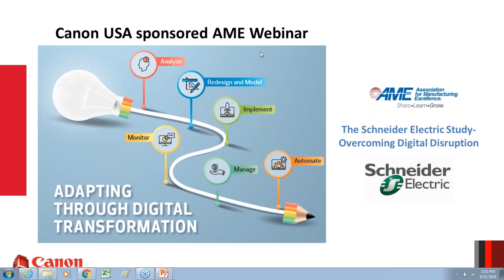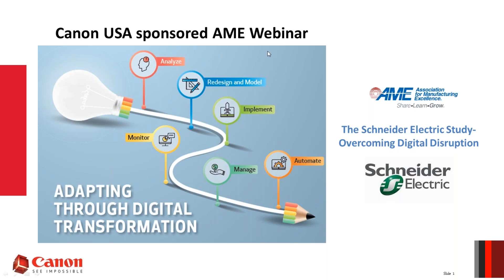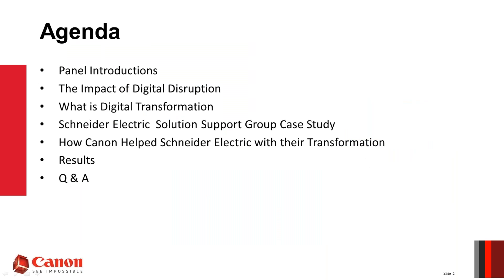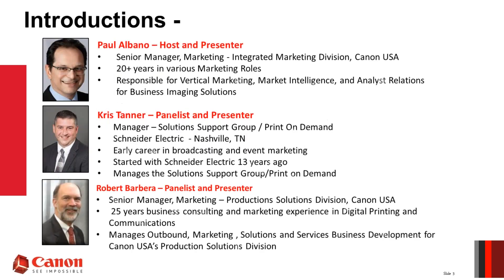Thank you, Tim. Good afternoon everyone. My name is Paul Albano from Canon USA and we're pleased to present this Canon-sponsored webinar with the Association for Manufacturing Excellence. Looking at the agenda this afternoon, our webinar will focus on the topic of digital disruption, including a case study example of how our client in the manufacturing vertical, Schneider Electric, was able to overcome and adapt to digital transformation in their implant printing environment with Canon solutions. We'll start with a quick round of introductions, then get into an overview of what digital disruption and digital transformation are, before introducing Bob Barbera from Canon and Chris Tanner from Schneider Electric to discuss how they successfully implemented a digital transformation process.